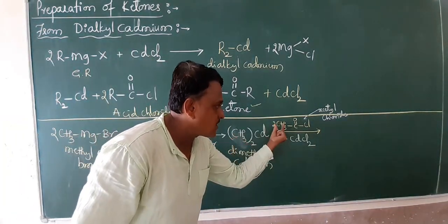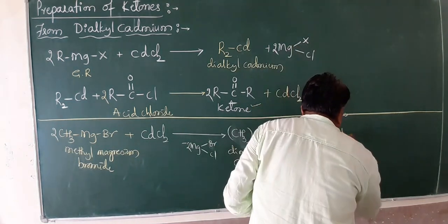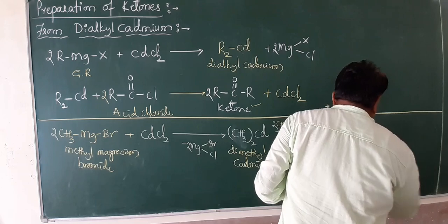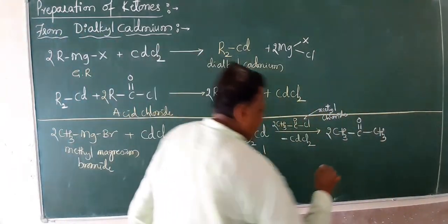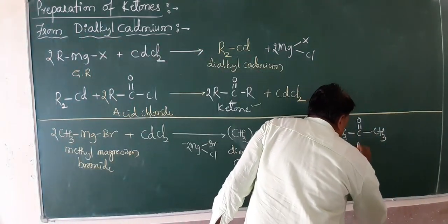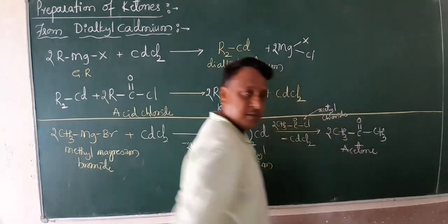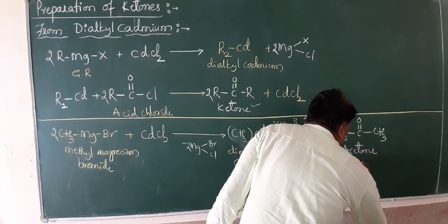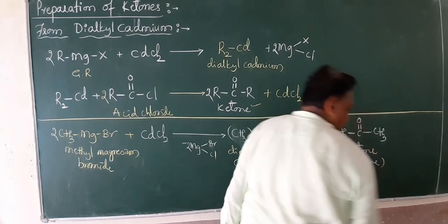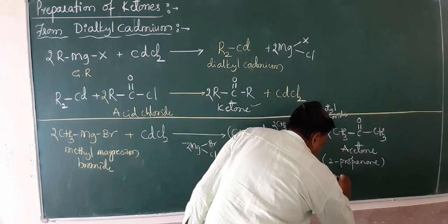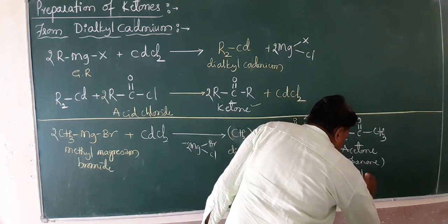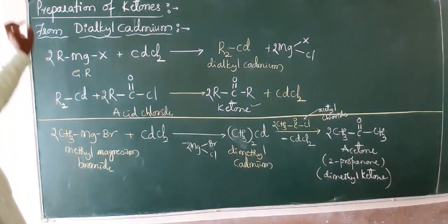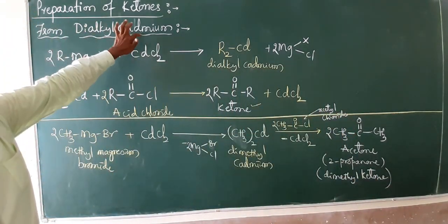What remains? CH3 two times. The answer is CH3-CO-CH3. The name of this compound is acetone. This is a wonderful reaction when preparing ketones from dialkyl cadmium.